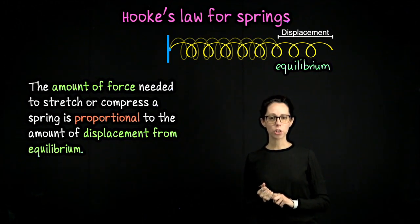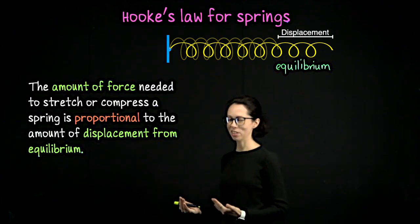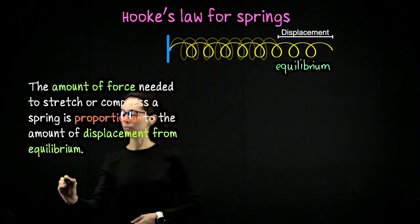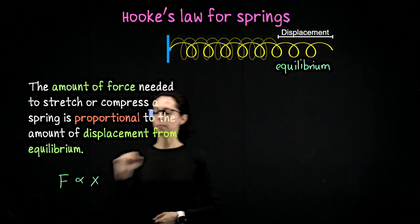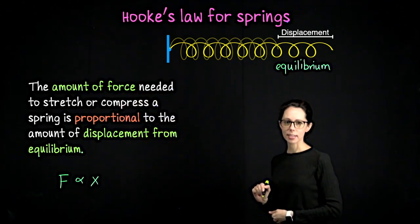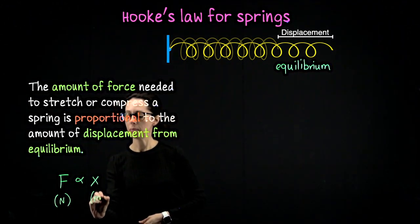Since the force is proportional to the displacement, what we can say to get to Hooke's Law for springs is that the force needed is proportional to the displacement. Here in SI units, force is in newtons and displacement is in meters.